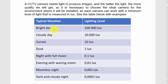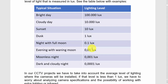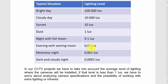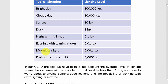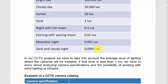For example, on a bright day you have around 100,000 lux of illumination. On a cloudy day you have less than that — around 10,000 lux. At sunset it drops to about 10 lux and keeps going down. The less light you have in the environment, the better camera you need. For example, on a moonless night you may need a camera with a minimum lux rating as low as 0.0001 lux.